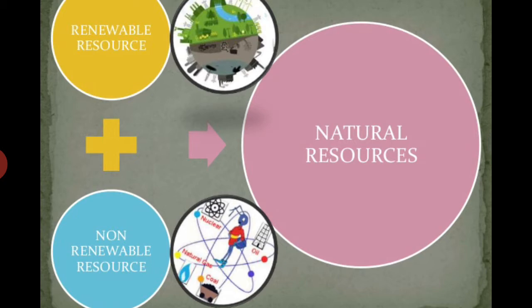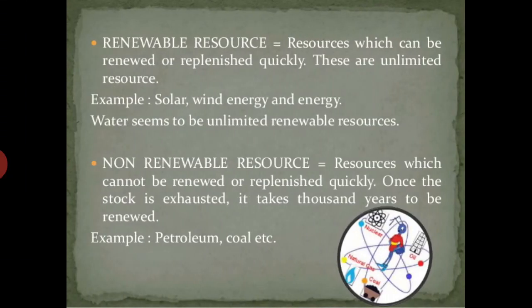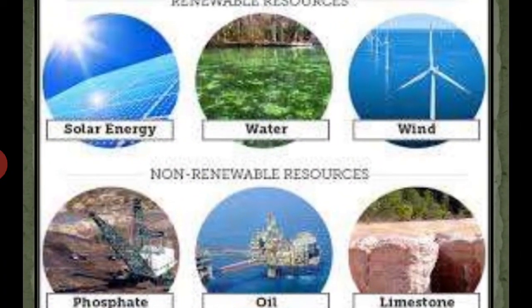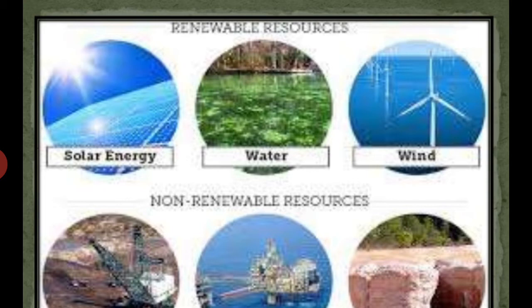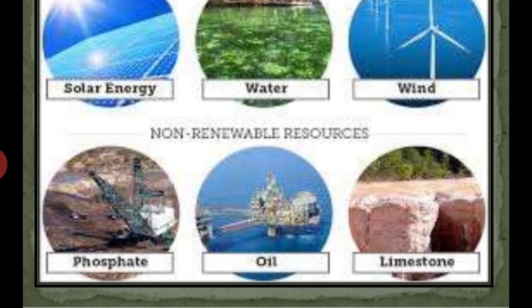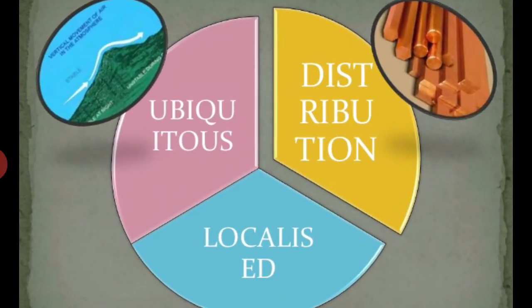There are also two more types of resources: renewable resources and non-renewable resources. Resources that can be renewed — like air and water — are renewable resources. Some resources are non-renewable, like fossil fuels. Once we use them up, we cannot use them again. Renewable resources include solar energy, water, and wind, while non-renewable resources include phosphorus, oil, and limestone — these cannot be renewed.